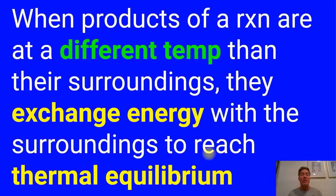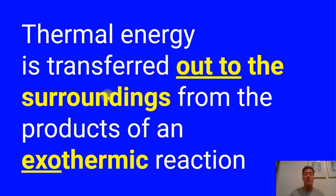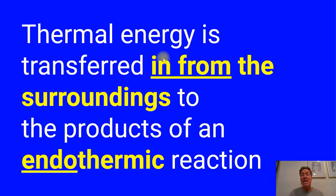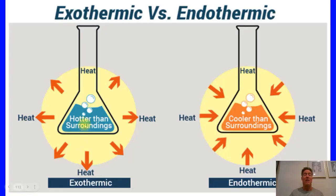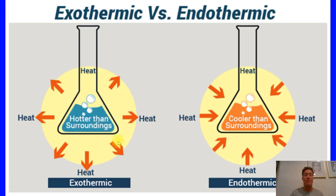When products of a reaction are at different temperatures than the surroundings, they exchange energy with the surroundings to reach thermal equilibrium. Thermal energy transferred out to the surroundings is an exothermic reaction (negative delta H); energy transferred in from the surroundings to the system is endothermic (positive delta H).